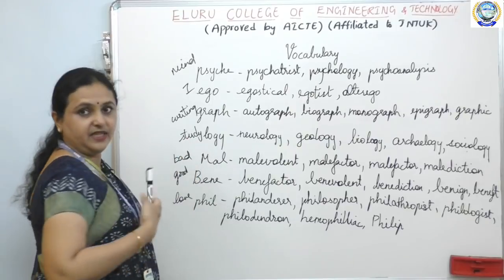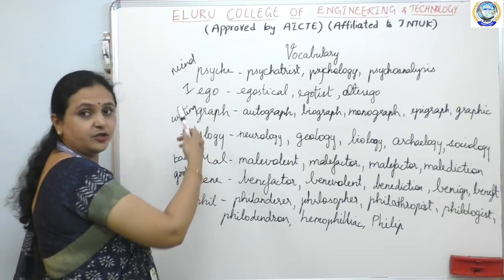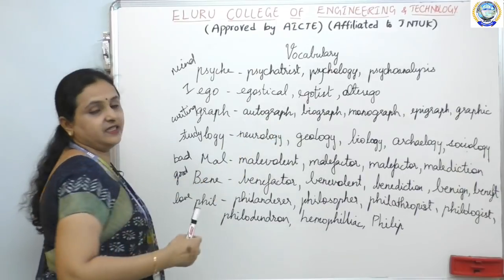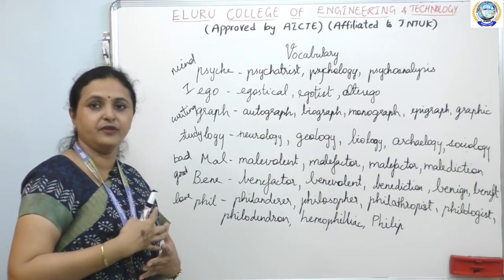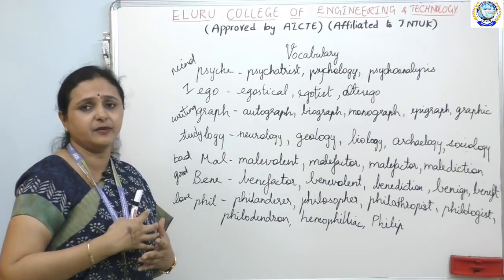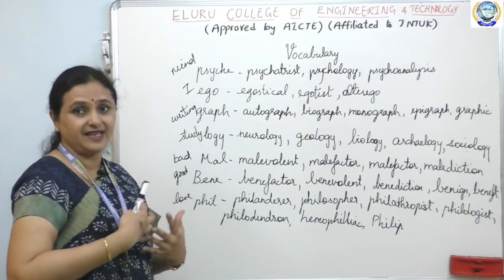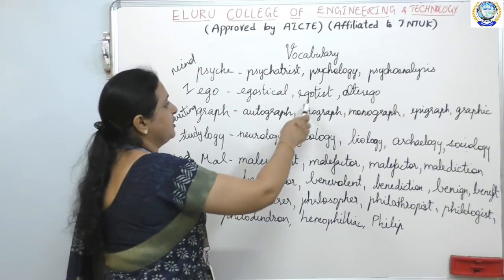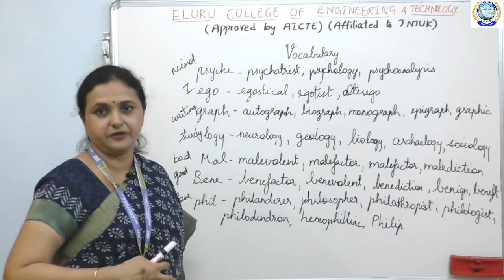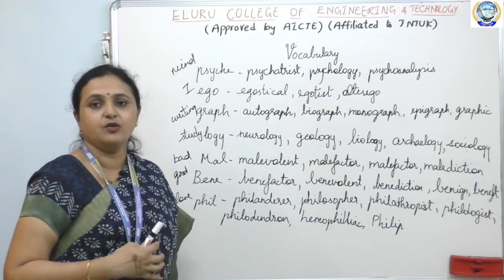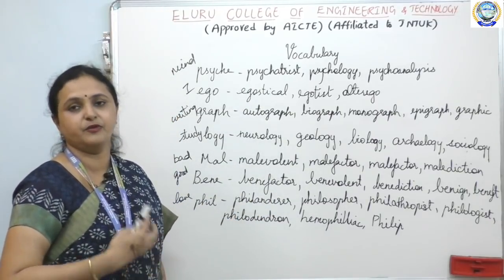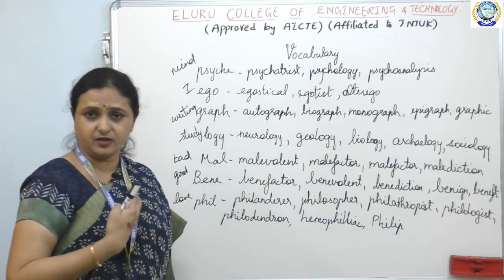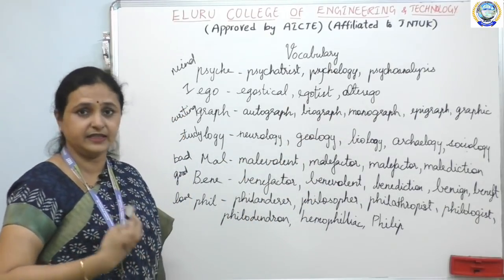Ego means 'I' and is also of Greek origin. Egoistical — somebody who is more concerned about themselves. An egoist is a person who puts himself first before thinking about others. And alter ego is also correlated to ego.